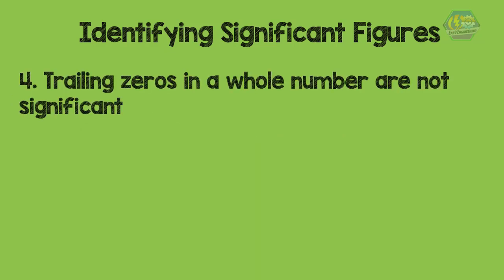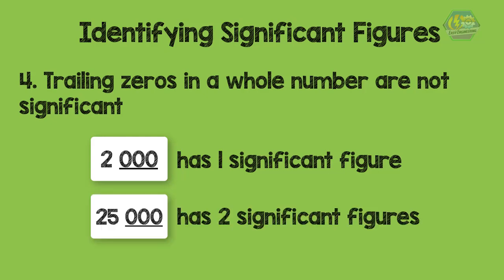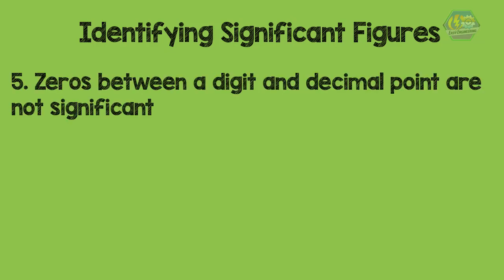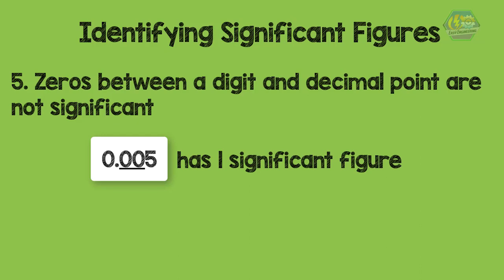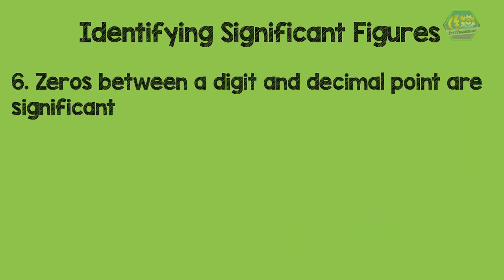Number four: trailing zeros in a whole number are not significant. For example, 2000 has only one significant figure and 25000 has two significant figures. Fifth rule: zeros between a decimal point and a digit are not significant. For example, 0.005 has one significant figure and 0.00005 has one significant figure.